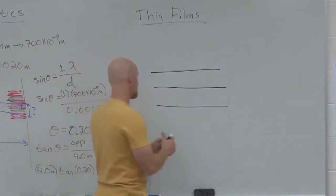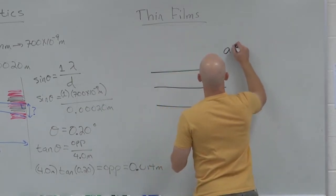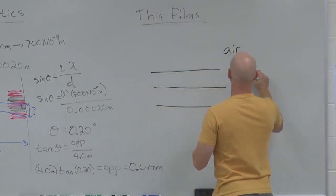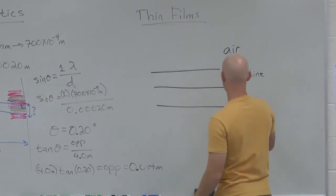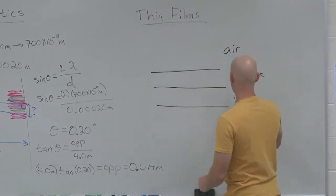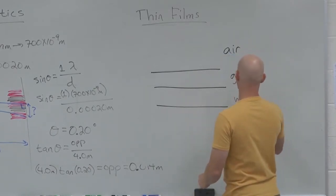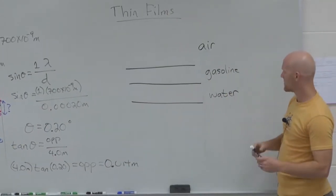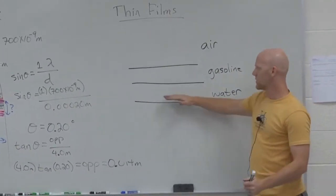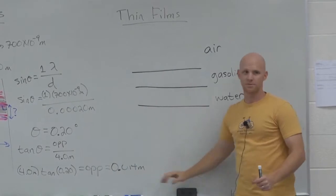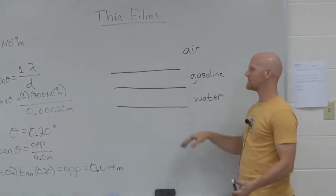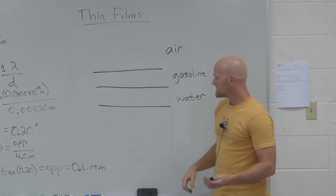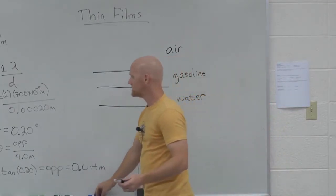So in this case, I've got air up here, and the example we're going to look at is gasoline on top of water. I don't know what the water's on top of, but it's on top of a lake — all the way down to the bottom or whatever. So in this case, we might have some interference going on as well.